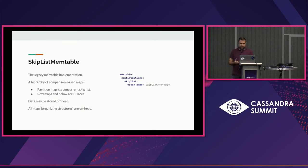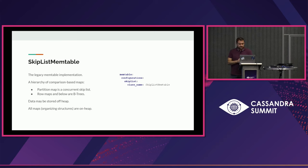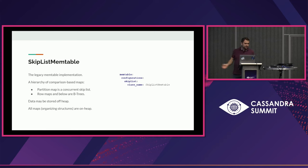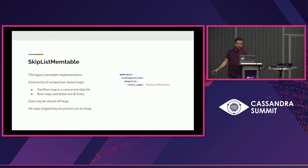We currently have three implementations provided with Cassandra. The first is the skip list memtable, which is the legacy implementation used since around version 3.0. It's implemented as a concurrent skip list of partitions. For every partition, there's a B-tree mapping to individual rows within that partition, and even more B-trees below that to find individual cells. Importantly, while data for each cell can be stored off heap, all the organizing structures — the skip list, multiple levels of B-trees for each partition — are all on heap, forming a very complex structure.